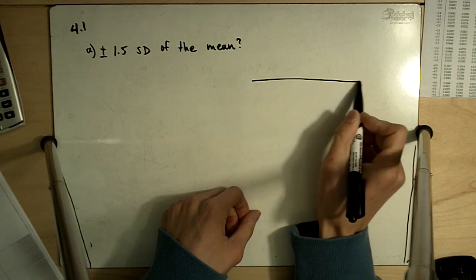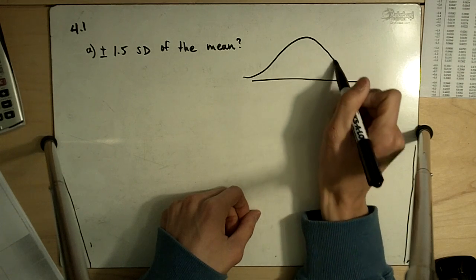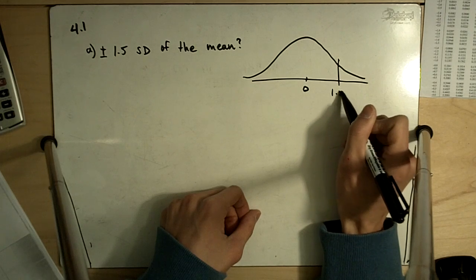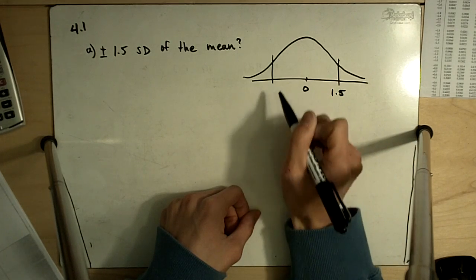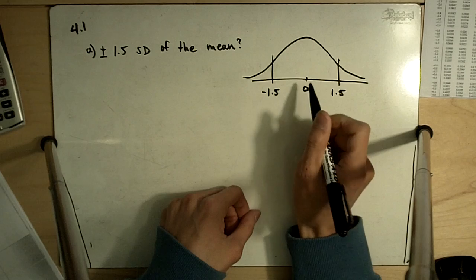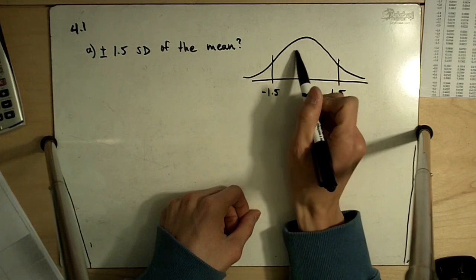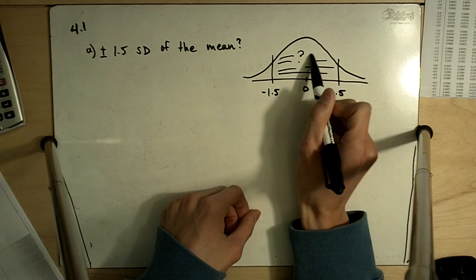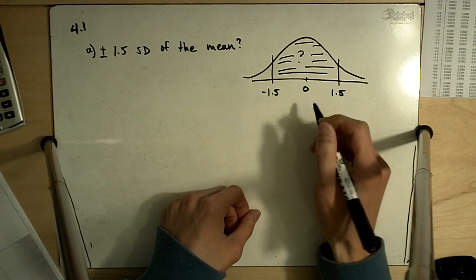What this means is we're at 0, and if we go up 1.5 standard deviations and we go down 1.5 standard deviations, we want to know what is contained in this area right here.